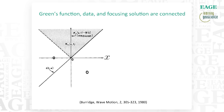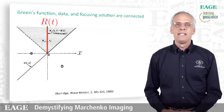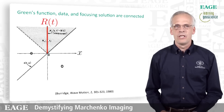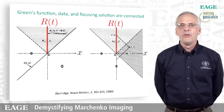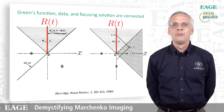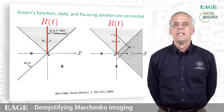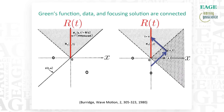The Green's function, the data, and the focusing solution are all connected. The reflected waves are recorded at location x equals zero as a function of time — these are the data R of t, living on the red line. The blue arrows indicate relations between the focusing solution and the data, basically showing how the representation theorems work, allowing us to connect the focusing solutions to the reconstructed data.